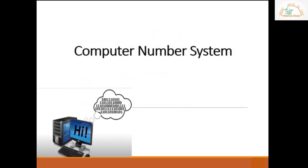Computer number system. We are familiar with different types of data like numbers, characters, and symbols. But these types of data are not suitable for computers. So this data will be converted into electric pulses, and each pulse is identified as a code. Then the code is converted into numeric form using ASCII.